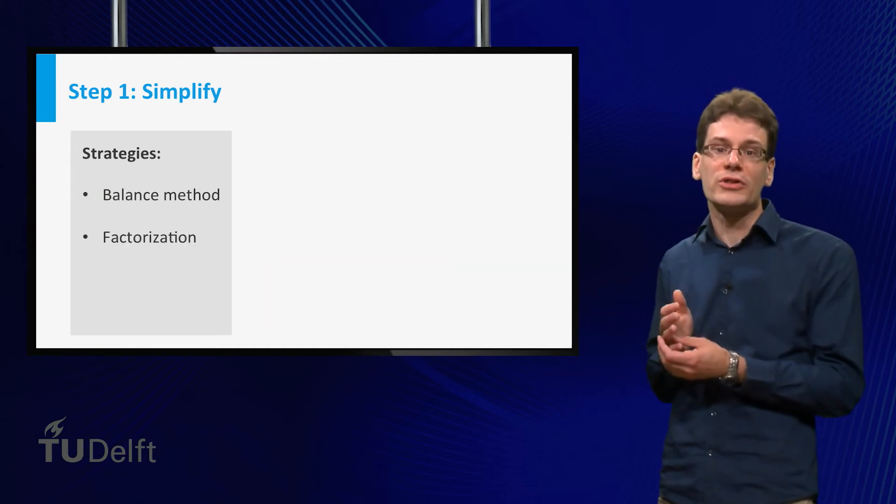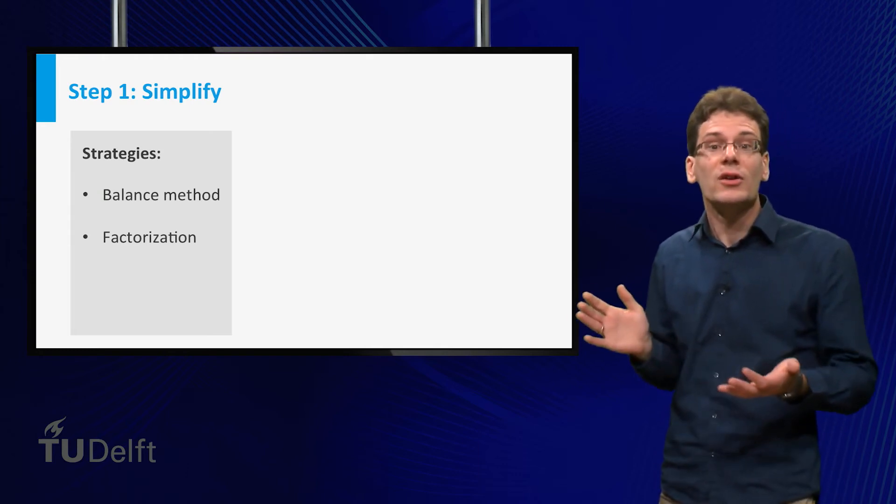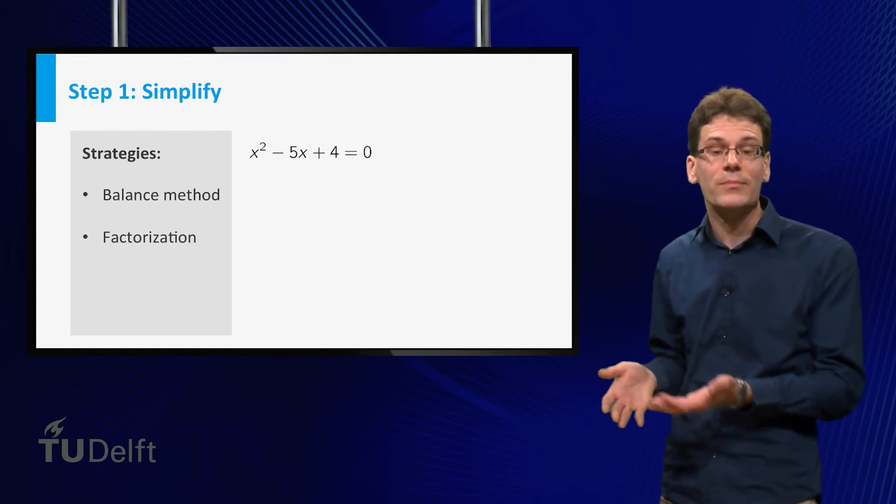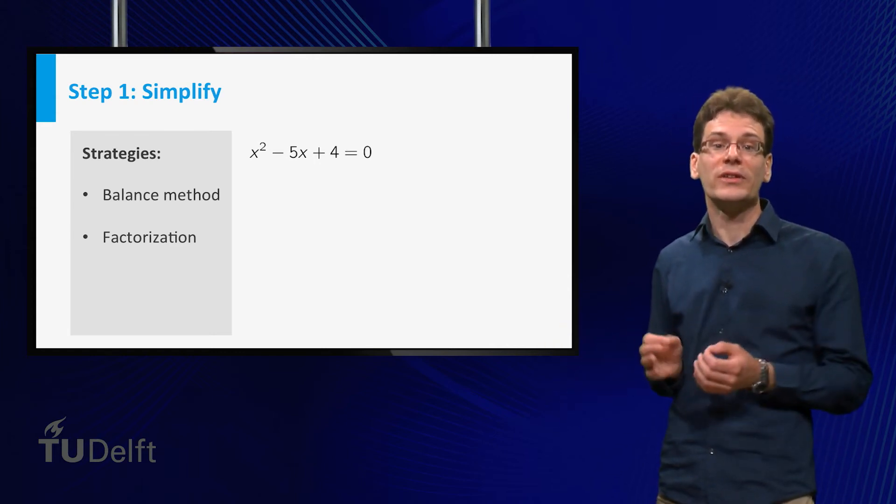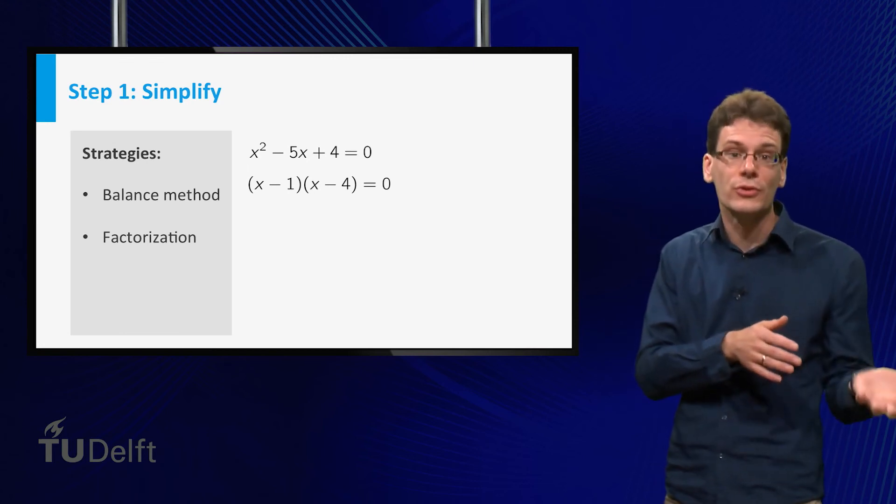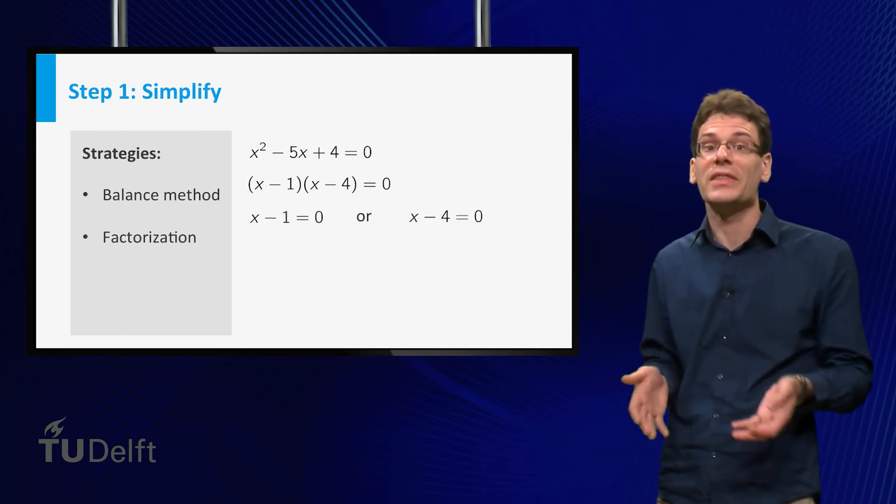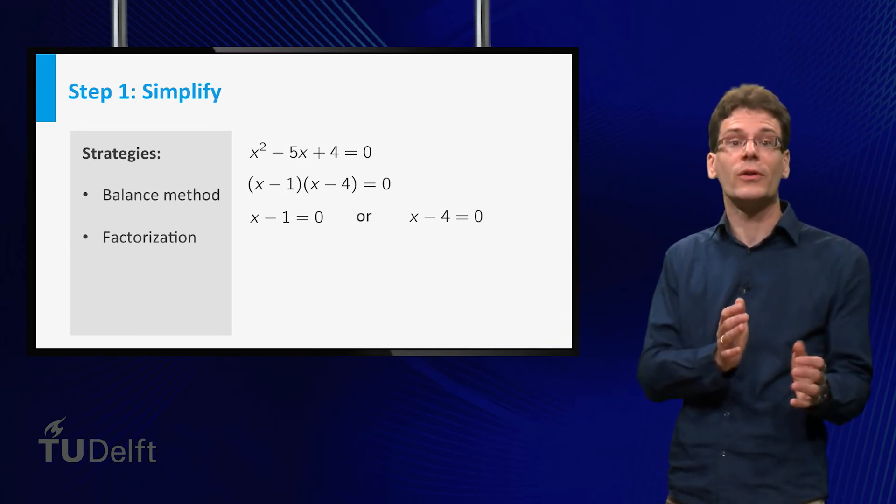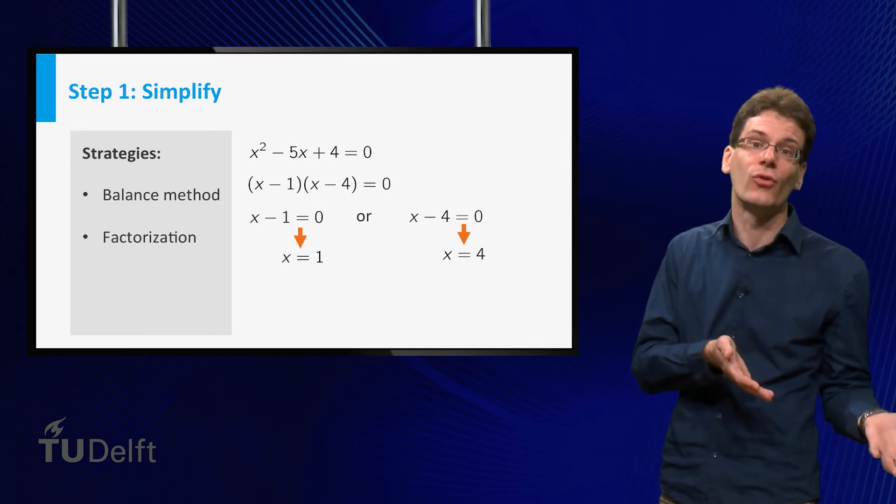Let's move on to other simplification strategies. You have already seen factorization. For example, the equation x squared minus 5x plus 4 can be written as x minus 1 times x minus 4 equal to 0. This implies that either x minus 1 equals 0 or x minus 4 equals 0, hence x equal to 1 or x equal to 4.